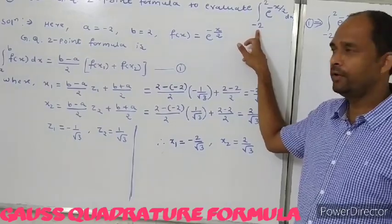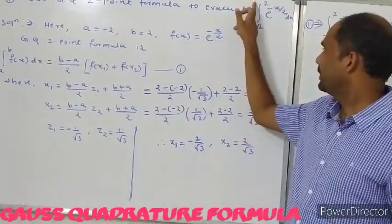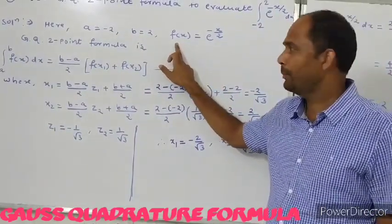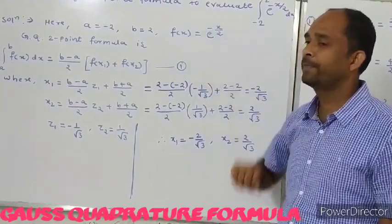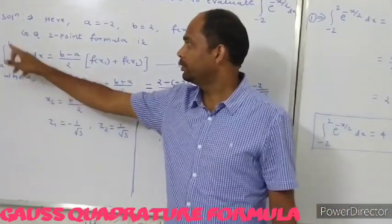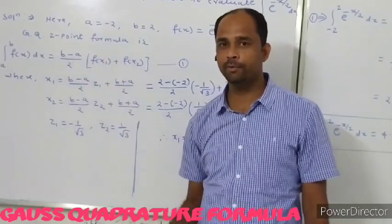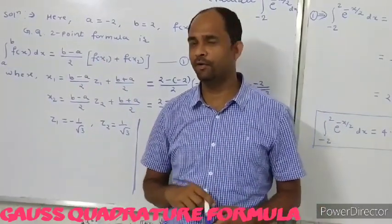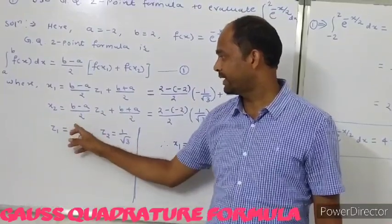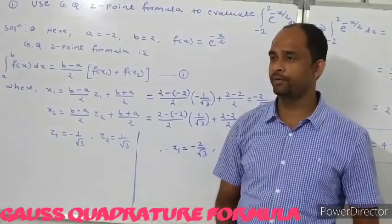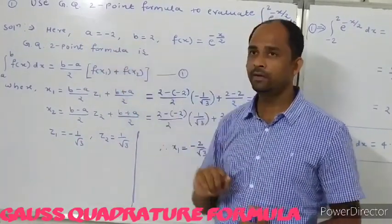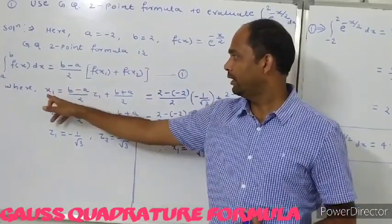Here the lower limit is a, so a is minus 2. The upper limit is b, so b is 2. The function f(x) is e to the power of (minus x divided by 2). We use the Gauss Quadrature 2-point formula: integral from a to b of f(x) dx equals (b minus a) upon 2 into f(x1) plus f(x2). The value of z1 is minus 1 by root 3 and z2 is 1 by root 3. We use z1, z2, a, and b to find x1 and x2.